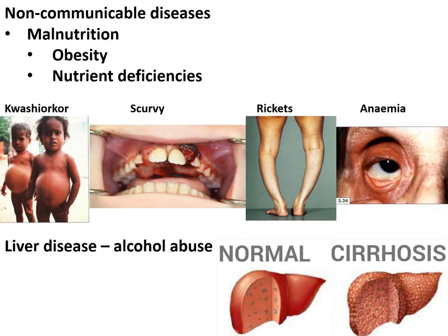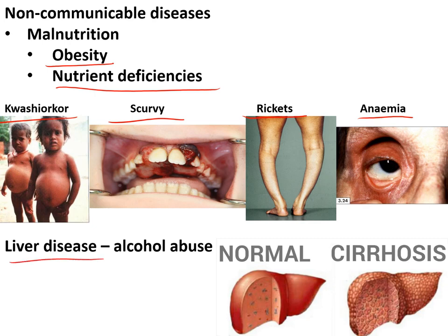Non-communicable diseases include malnutrition — getting too much or too little of certain nutrients — for example obesity from too much fat and sugar, and deficiencies such as kwashiorkor (lack of protein), scurvy (lack of vitamin C), rickets (lack of vitamin D), and anaemia from lack of iron. Liver disease caused by alcohol abuse — cirrhosis — is a permanent breakdown of the liver with no cure.